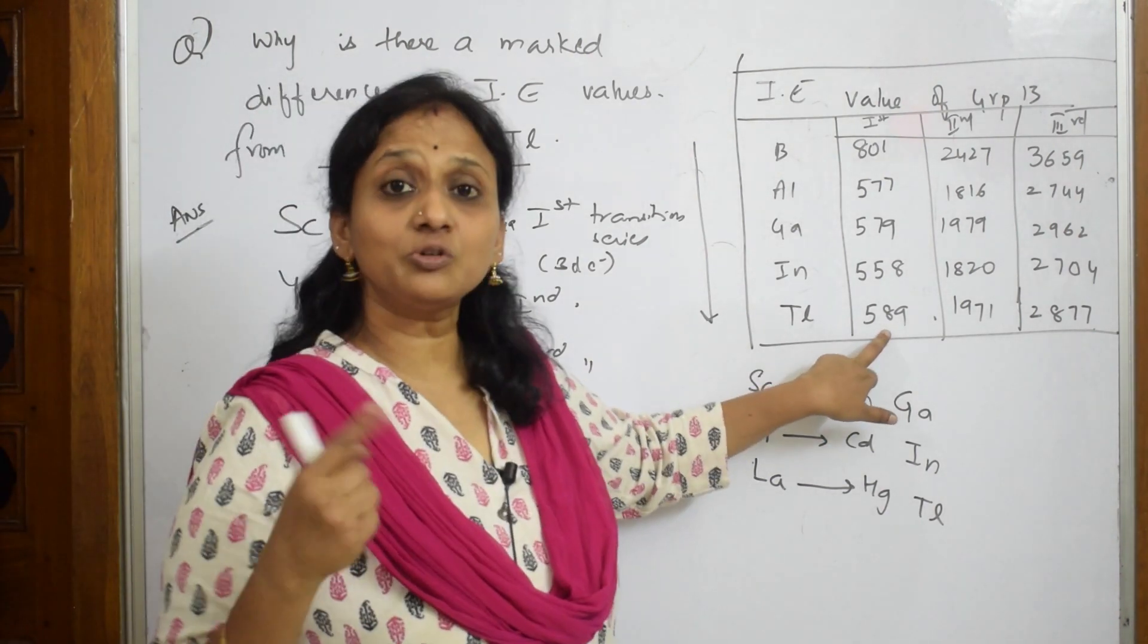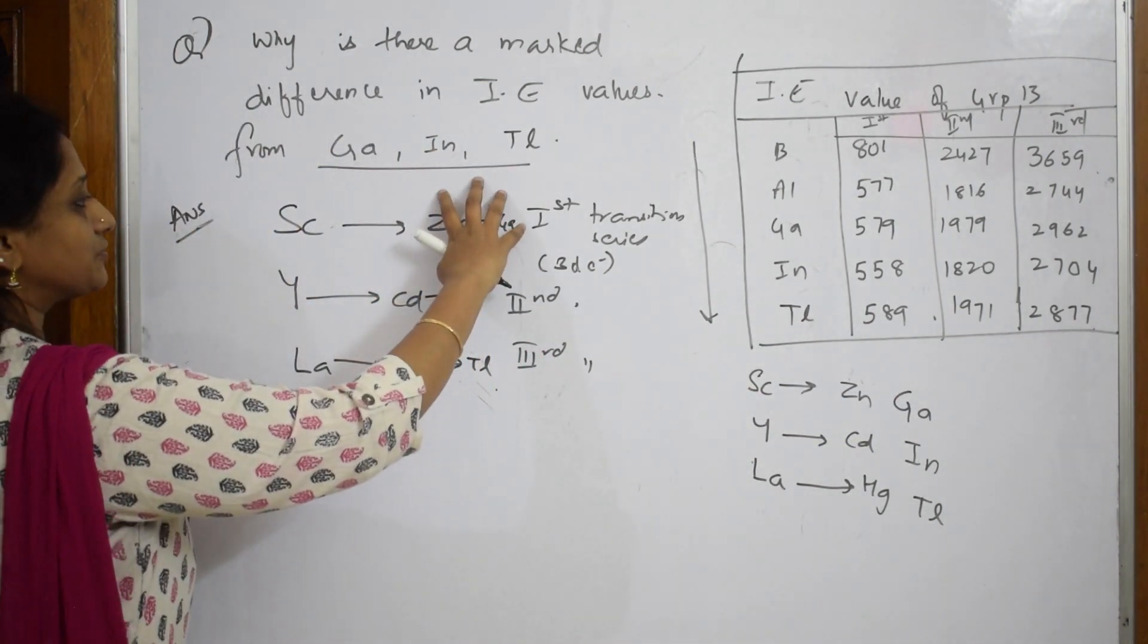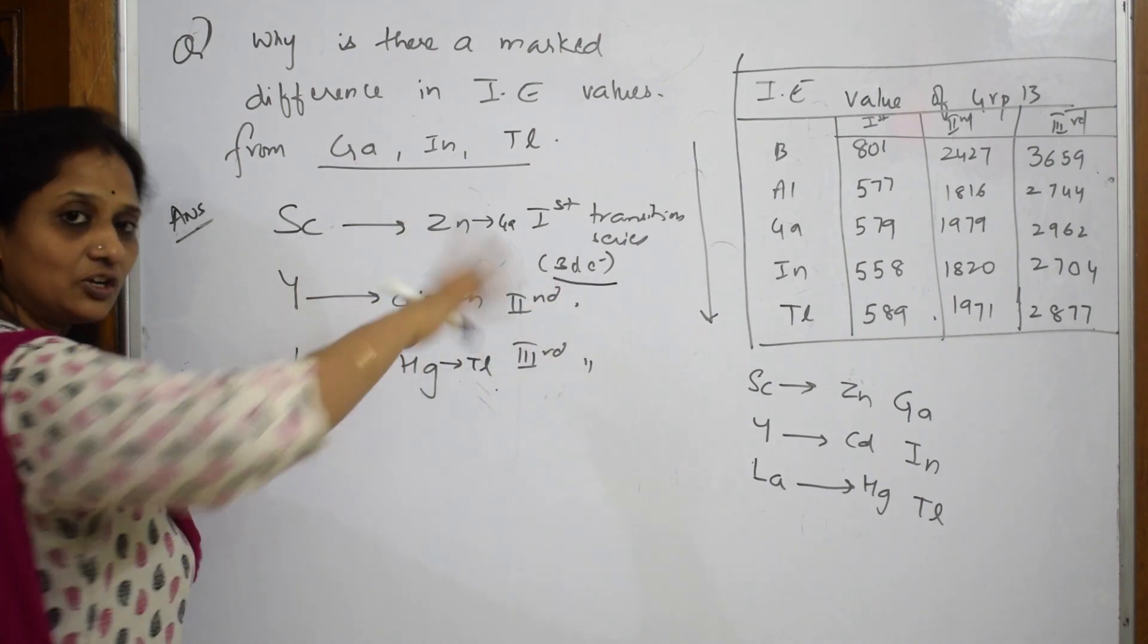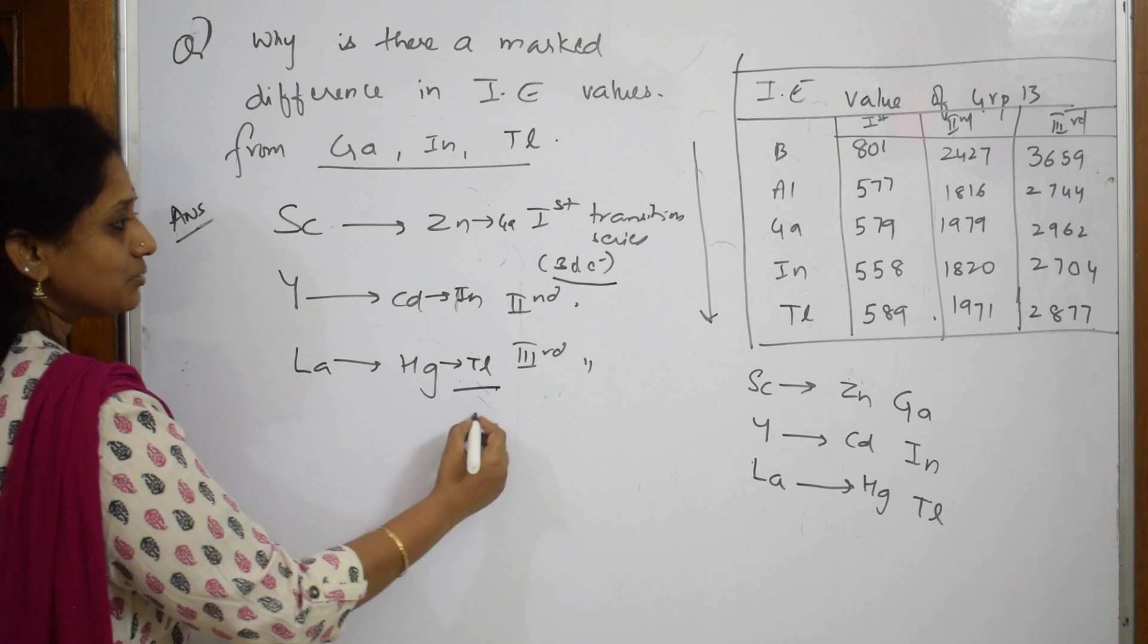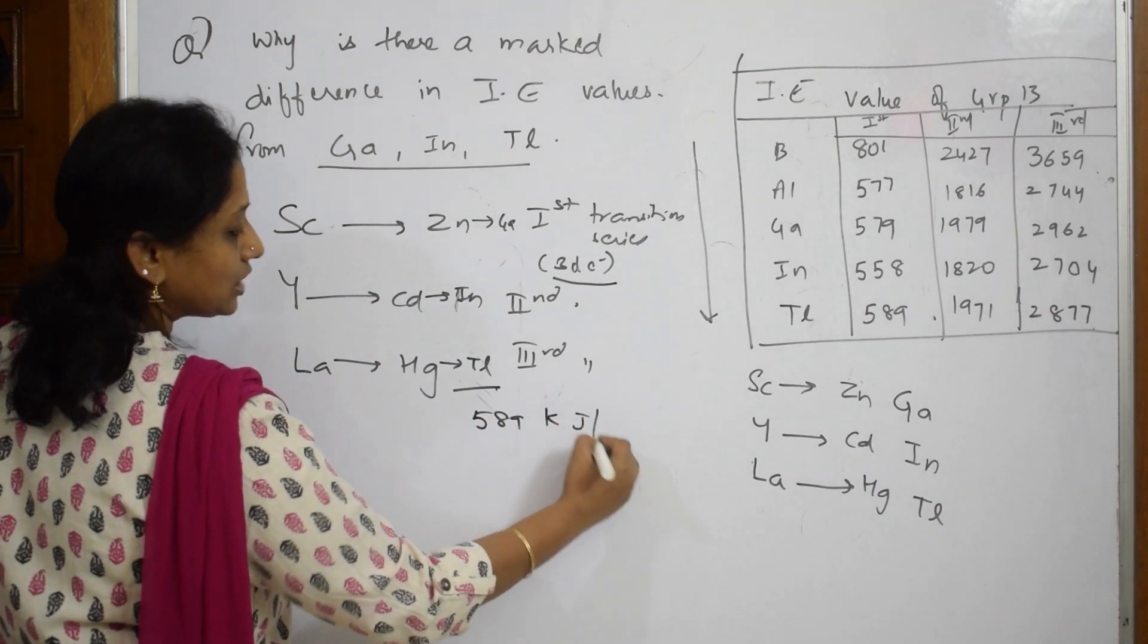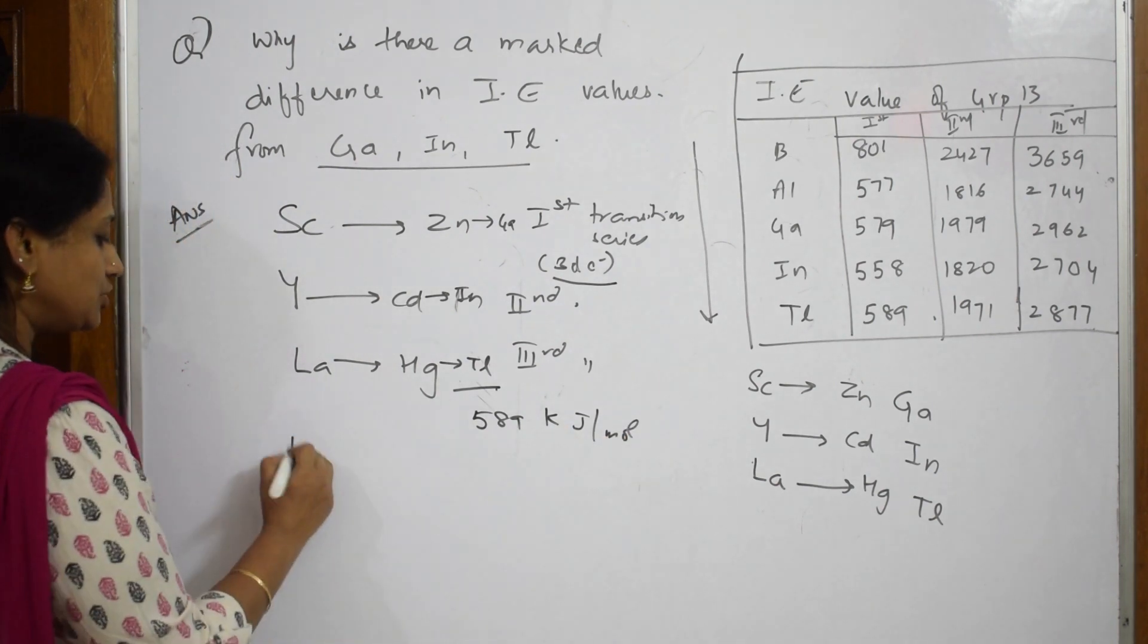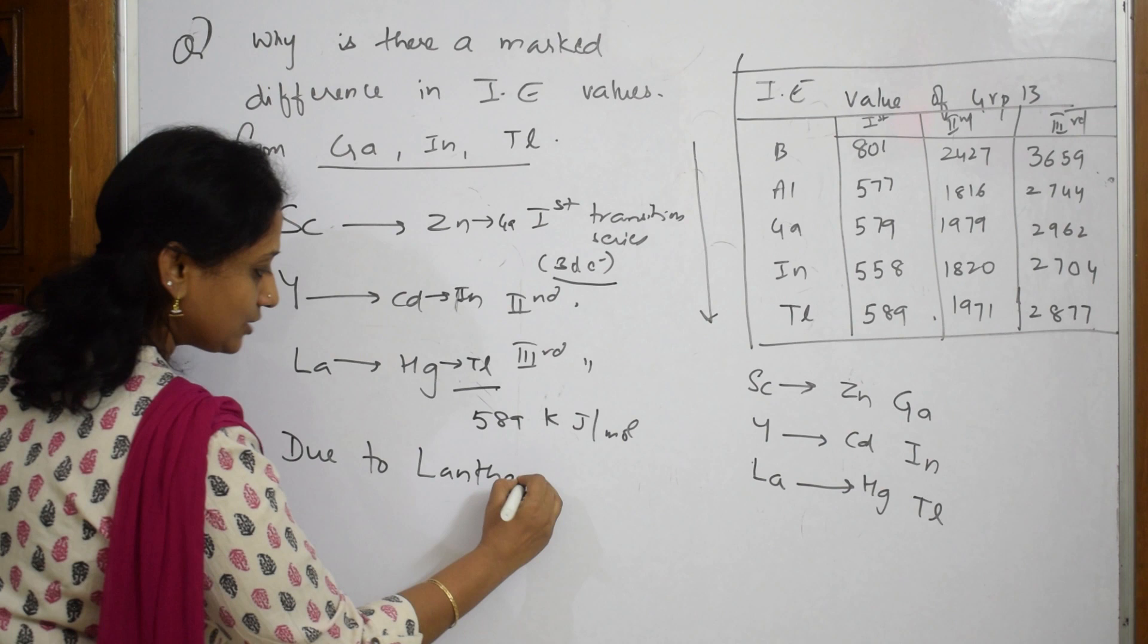There is a lower amount of energy required to take out that electron. So here you should write the first reason: because of the filling of 3d electrons. Second reason would be: Thallium has higher energy, that is 589 kilojoules per mole, why? Due to lanthanide contraction.